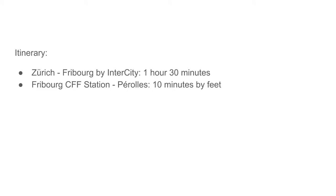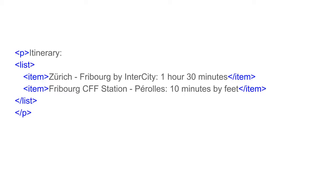Let's proceed to the encoding of a text. I have here a very simple little itinerary, which says that to go from Zurich to Fribourg, you take an intercity train for one and a half hours, and then you walk from the Fribourg central train station to the Pérole neighborhood for 10 minutes. The structure of this little text could be a paragraph containing a list with two items, each item being a different leg of a journey.